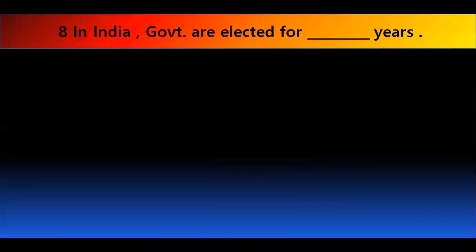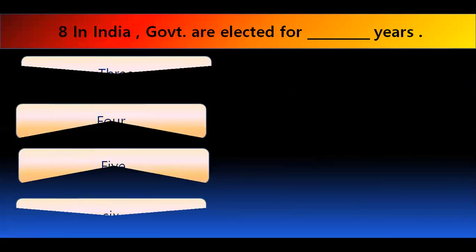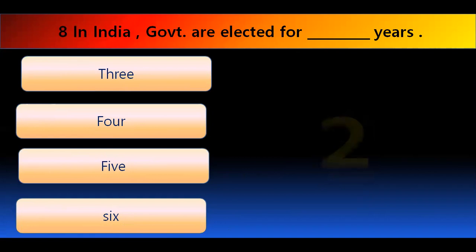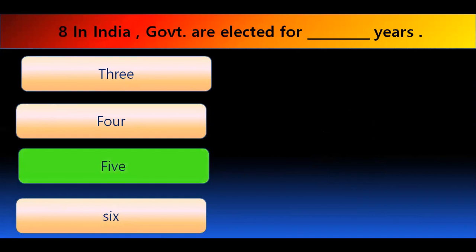In India, governments are elected every how many years — three, four, five, or six? The right answer is five. In India we have elections every five years. And if the government does not work well, then the other party gets the vote to form a government that will work better.